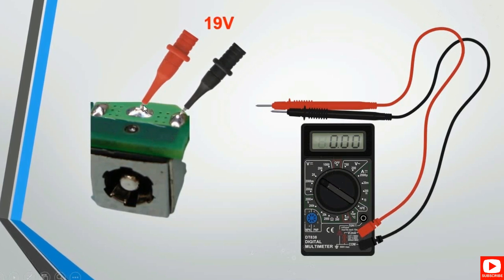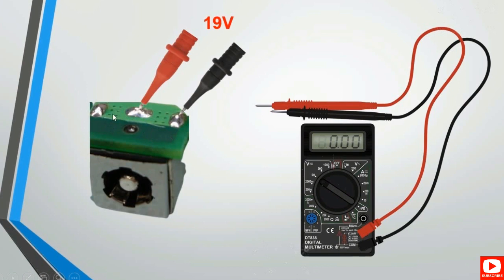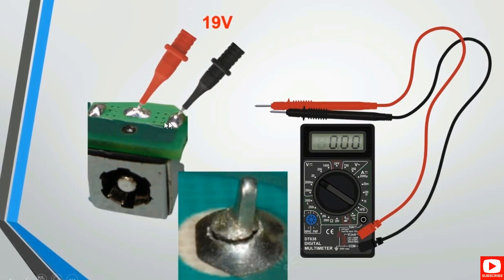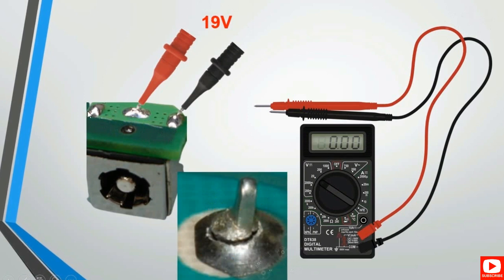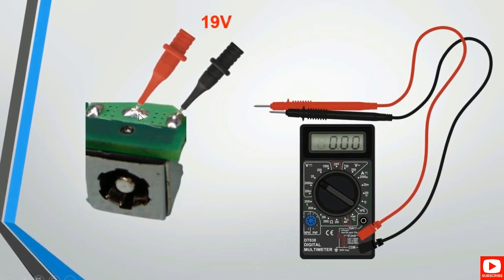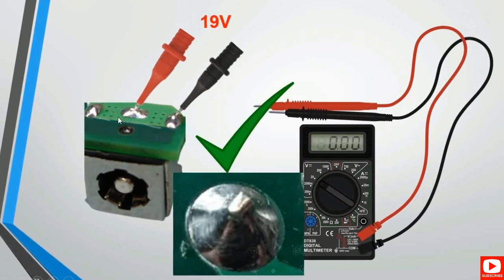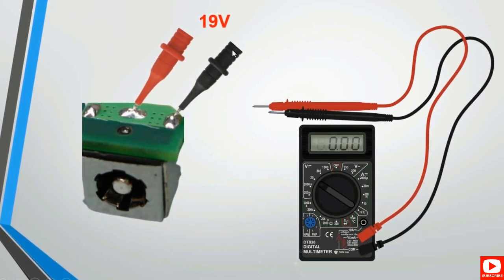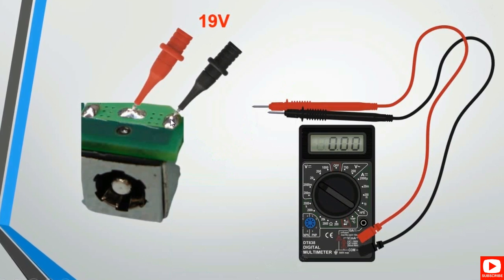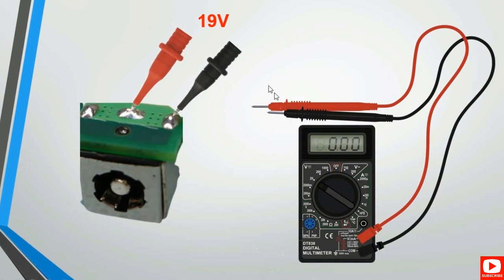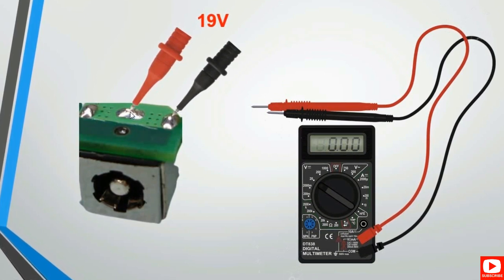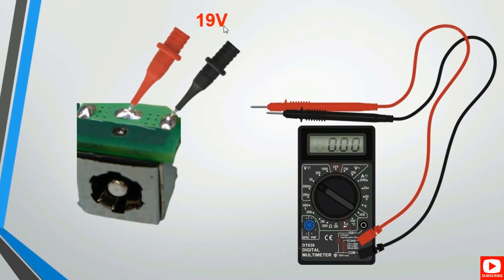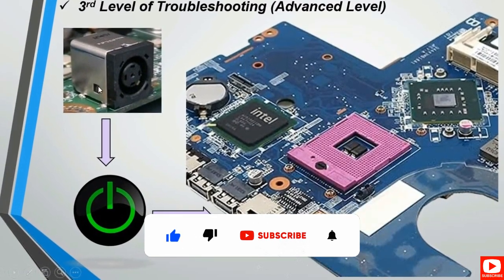First, check the solder on the terminals — look for any dry solder joints. If you find a dry joint at any terminal, you should resolder it. The power jack has two terminals: ground and the center high pin. When you measure between the high pin and the low pin with the multimeter, you should find 19 volts, depending on whether it's a 19V or 20V adapter. Finding 19V means the voltage is passing to the motherboard and the power jack is good.